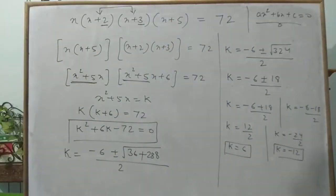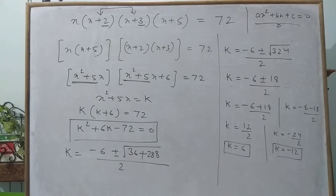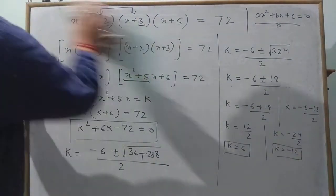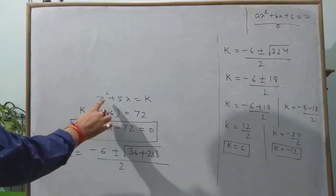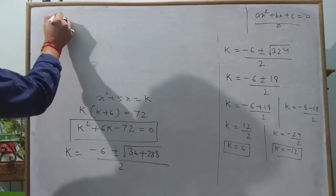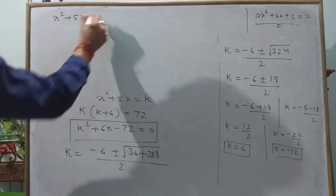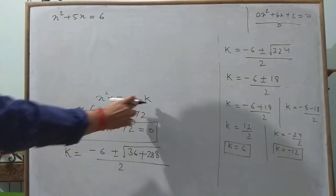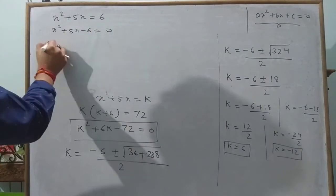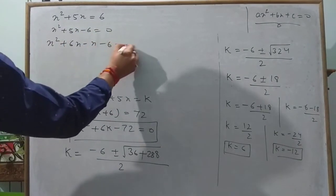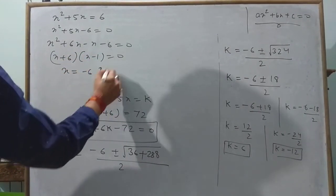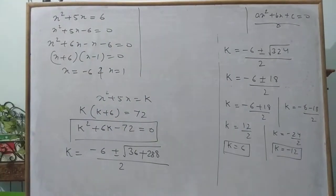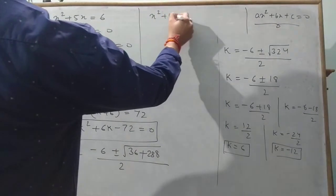Since x² + 5x = k, we substitute k = 6: x² + 5x − 6 = 0, which factors as (x + 6)(x − 1) = 0, giving x = −6 and x = 1. Then we substitute k = −12: x² + 5x + 12 = 0.